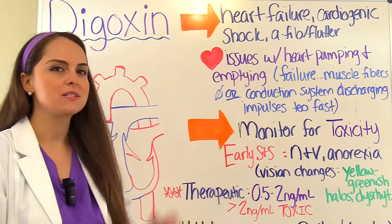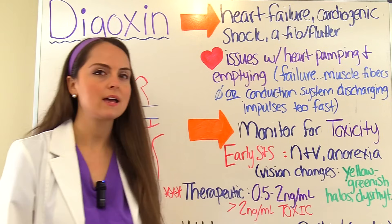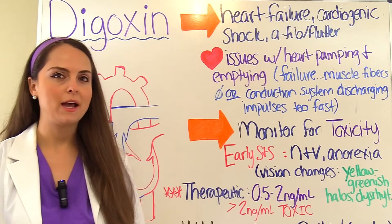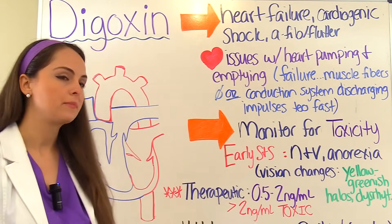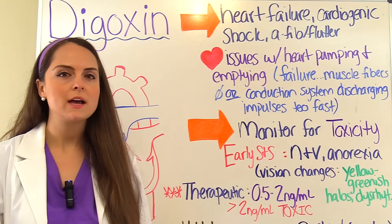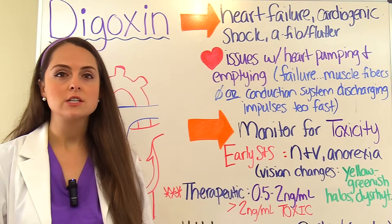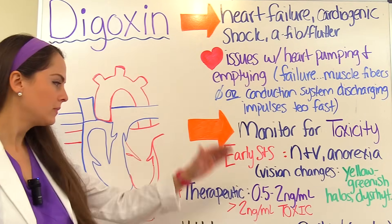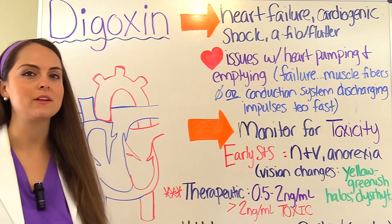Now let's talk about nursing responsibilities. With digoxin, we really want to monitor for toxicity because patients can become toxic with this drug. The early signs and symptoms are GI-related — nausea, vomiting, anorexia. Patients can also report vision changes like double vision, blurred vision, or especially seeing yellowish-green halos, which is a warning sign. It can also cause dysrhythmia. Digoxin has a therapeutic range you need to remember, so commit this to memory — it's another one of those lovely test questions.